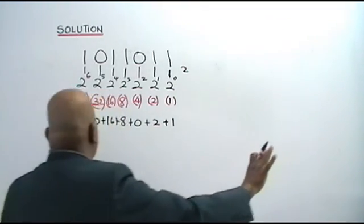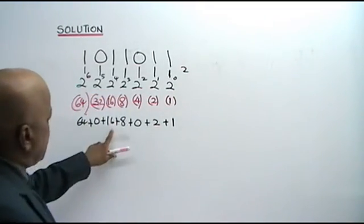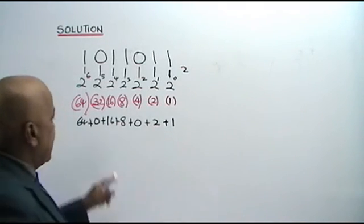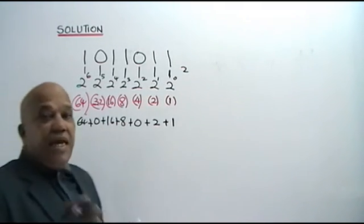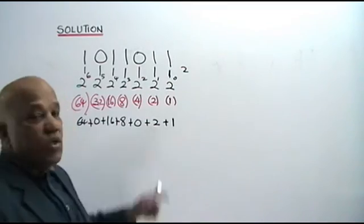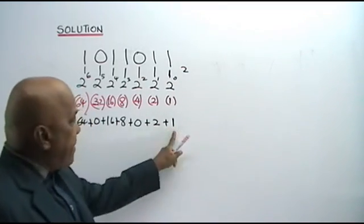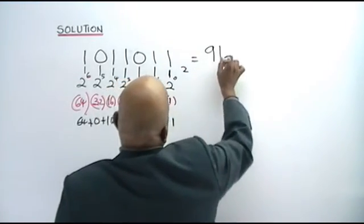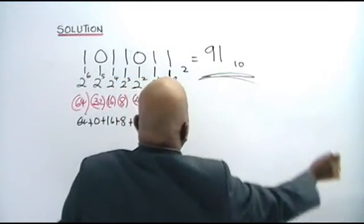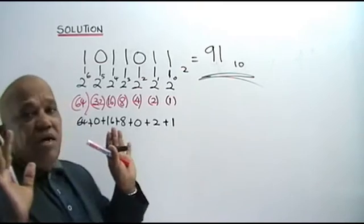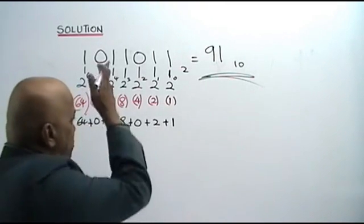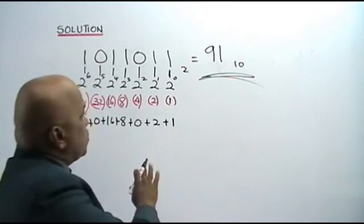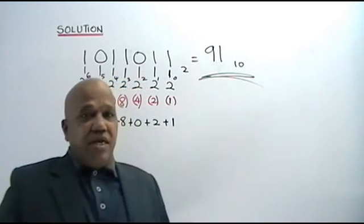Now, you add up all this. 64 plus 16 is 80. 80 plus 8 is 88. Plus 2 is 90. 90 plus 1 is 91. So, this is equal to 91 base 10. That is your answer. This is how you convert from base 2 to base 10.